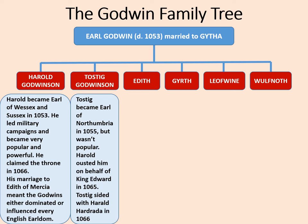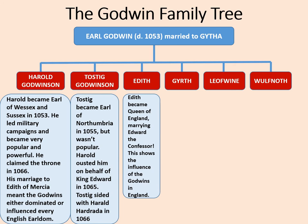Then we have Tostig Godwinson — not quite such a happy story. Tostig became Earl of Northumbria in 1055 but wasn't popular. Harold ousted him on behalf of King Edward in 1065. Tostig sided with Harold Hardrada in his invasion of 1066, during which time he actually died.